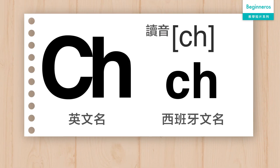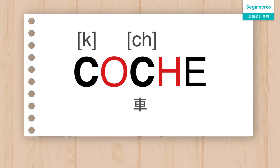而另外一個組合就是 Ch，它的發音和英文一樣，也是 Ch。例如 Coche，第一個 C 是跟著一個 O 所以發 K 音，第二個 C 是跟著一個 H 所以發 Ch 音，Coche。